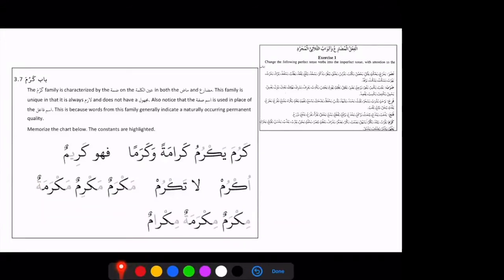Next we have Bab-Karuma, which is our last clan. So Karuma has O sound. So far we do not have any clan that was taking O sound on the middle root letter. So this is the unique about this Karuma. And when it comes to Mudariya, it becomes Yakrumu. Yakrumu is like Yansuru. So in Mudariya it is going to rhyme with Bab-Nasara. So Karuma, Yakrumu, Karamatan, Va-Karaman. So it is going to take two masters. فَهُوَ كَرِيمٌ فَعِيلٌ. So this فَعِيلٌ pattern are derived from Karuma clan.